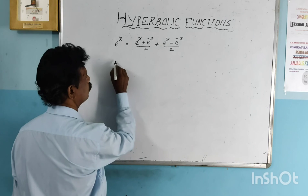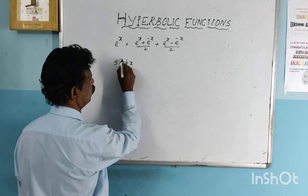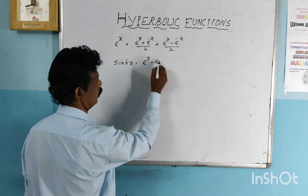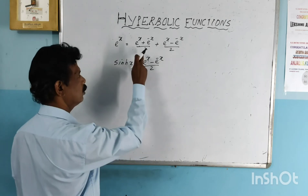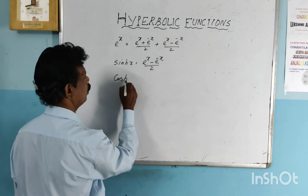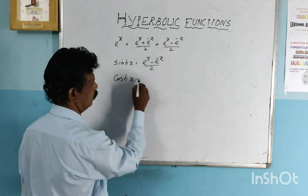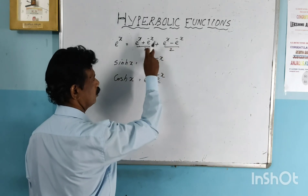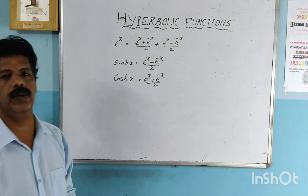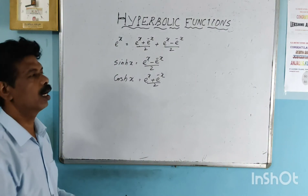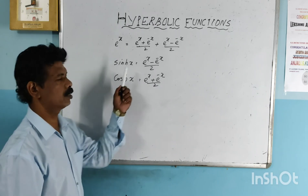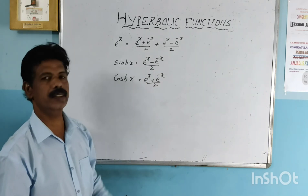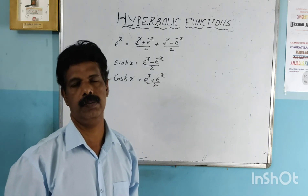So we can write: sinh(x) equals e raised to x minus e raised to minus x all over 2. This is the odd function. The even function, cosh(x), equals e raised to x plus e raised to minus x all over 2.